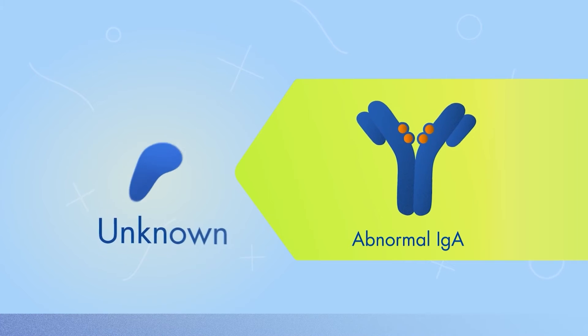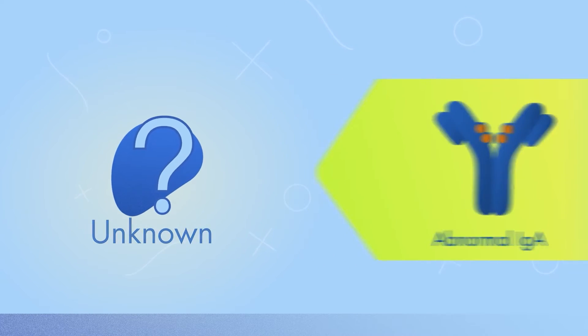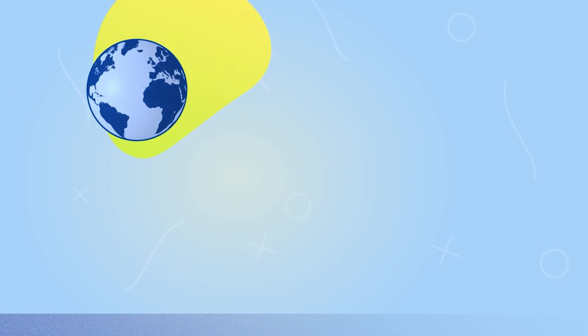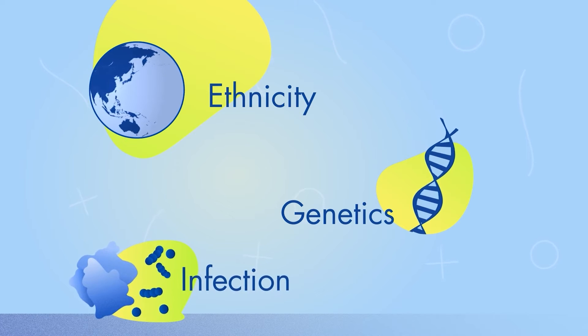It is not known what causes the formation of abnormal IgA in people with IgAN. In some people, this may occur due to ethnicity, genetics, or exposure to environmental factors.